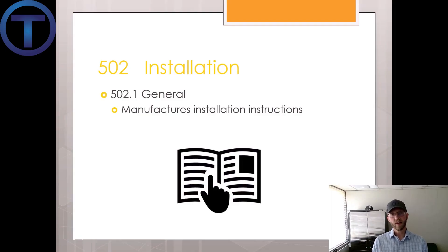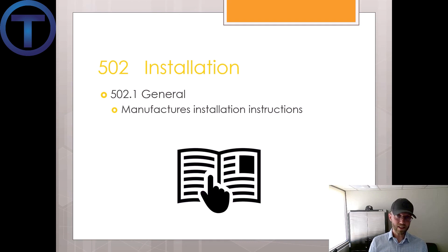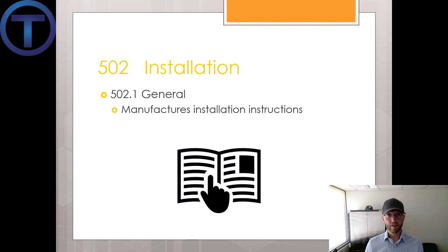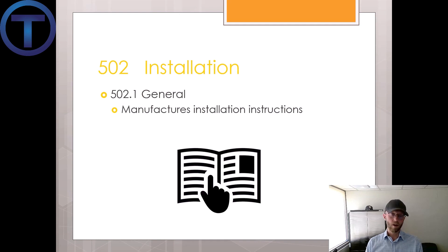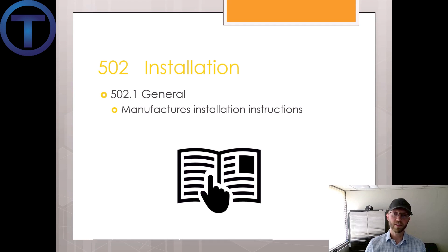Now on to Section 502, which covers installation. In 502.1 there is a specific requirement that you follow the manufacturer's installation instructions for any type of water heater you install. If you're not familiar with that water heater you should definitely open that instruction book and look through it entirely. This section also references the International Mechanical Code, NFPA 70, and the International Fuel Gas Code, telling us that we need to conform to requirements in those codes that apply to the installation of a water heater.